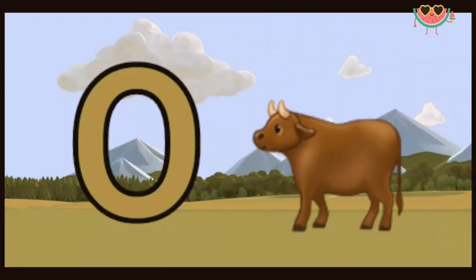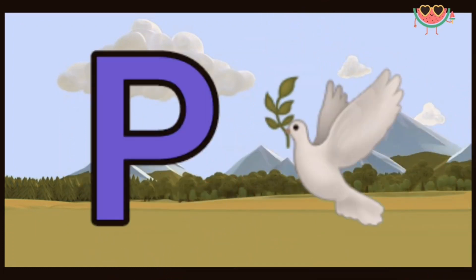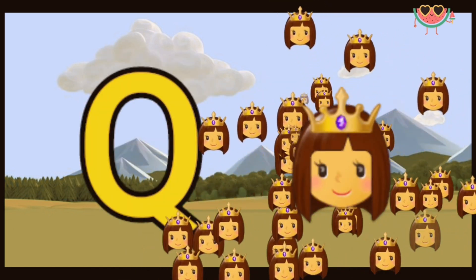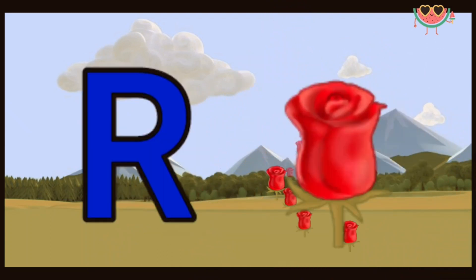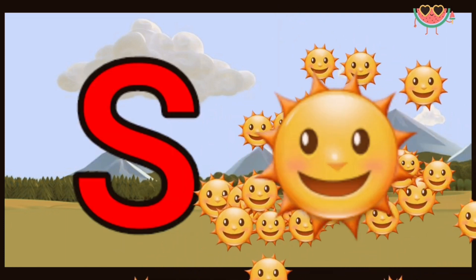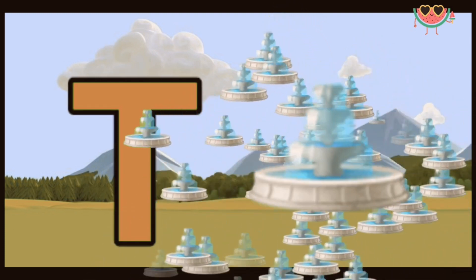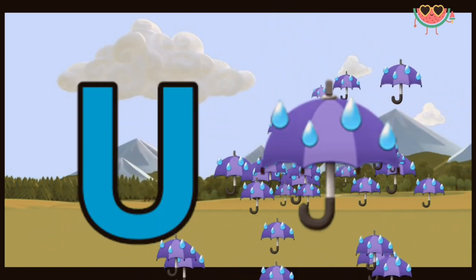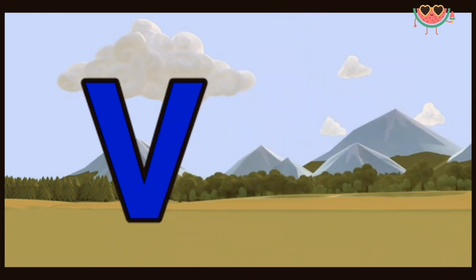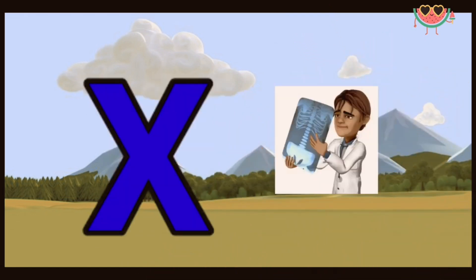O for ox, P for pigeon, Q for queen, R for road, S for sun, S for sun, T for tap, U for umbrella, U for umbrella, V for van, V for van, W for wallet, W for wallet, X for x-ray.